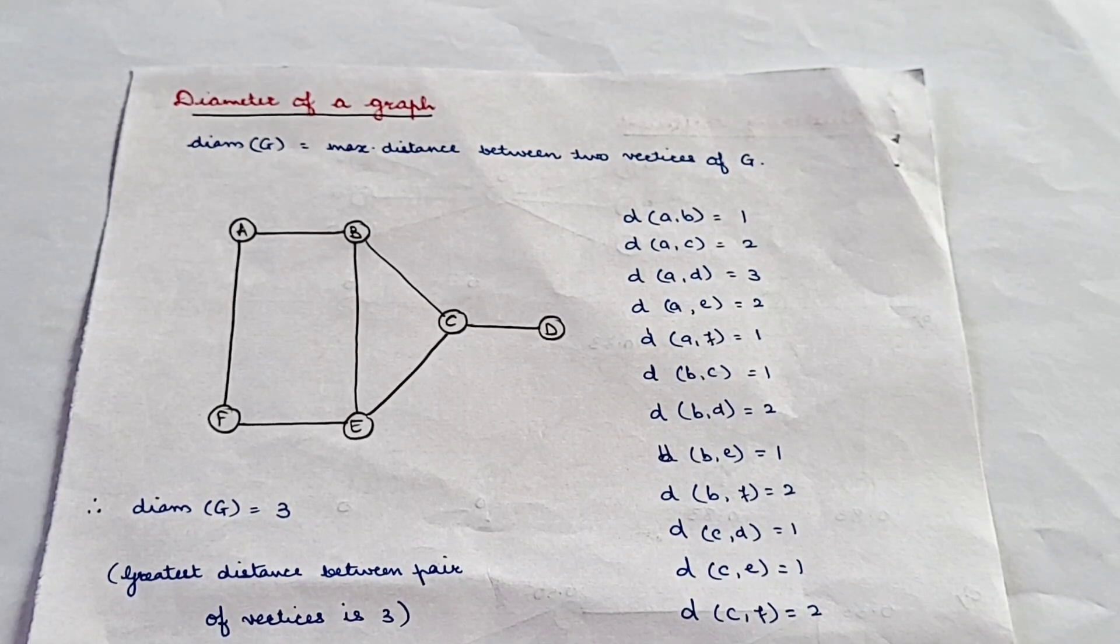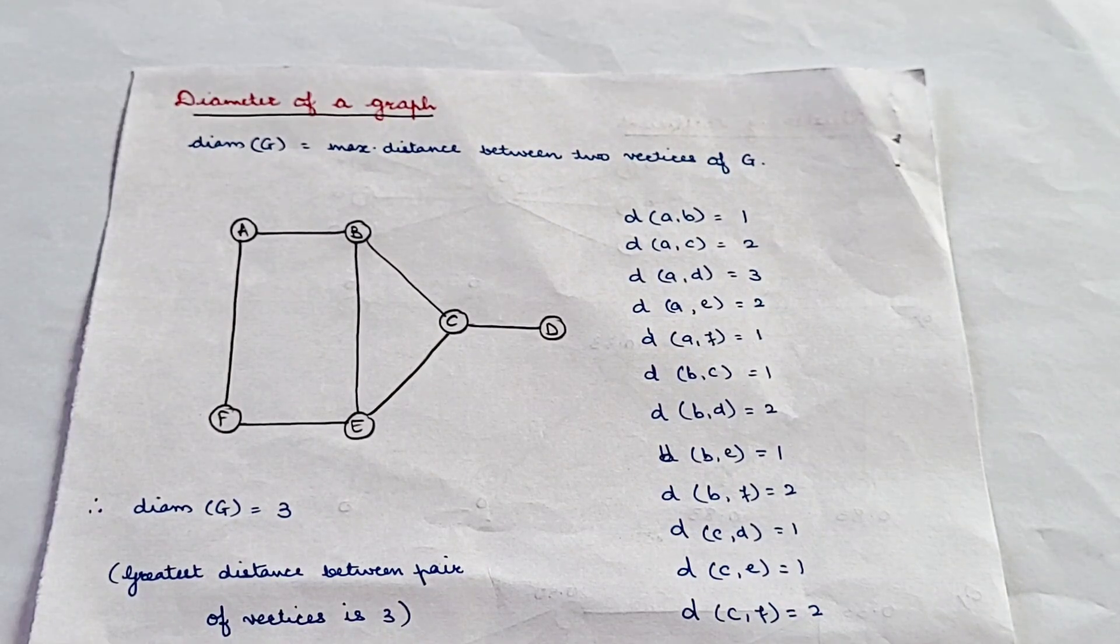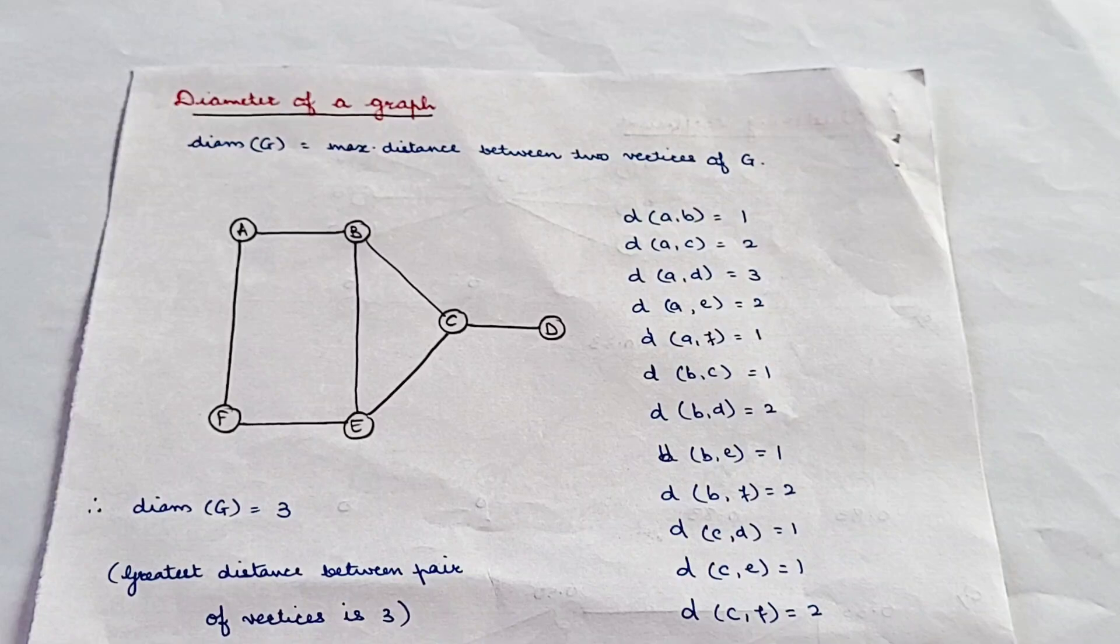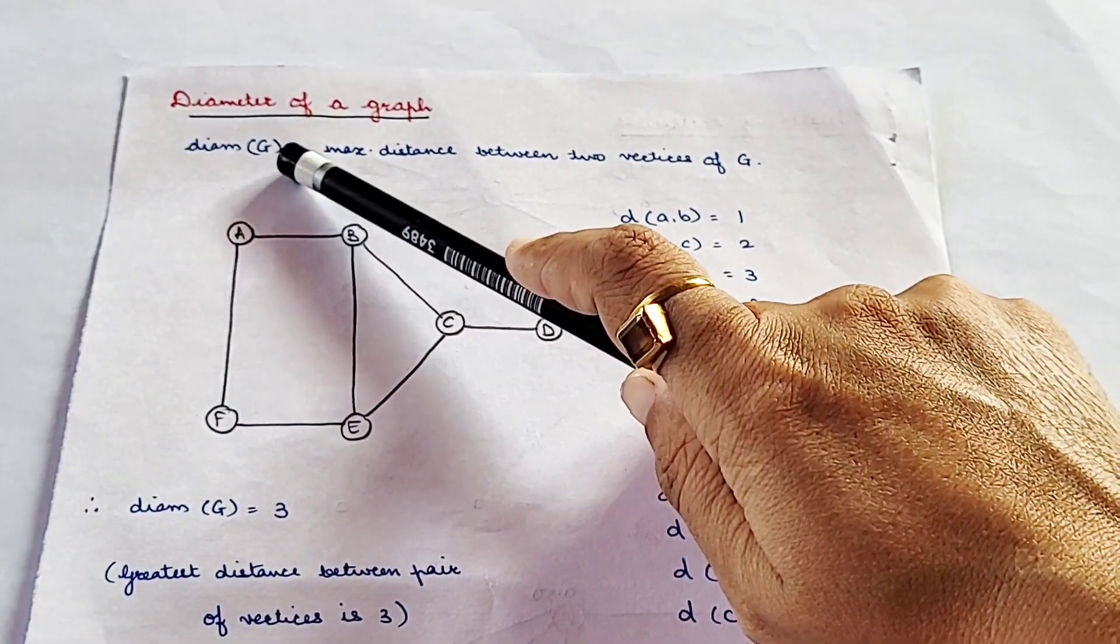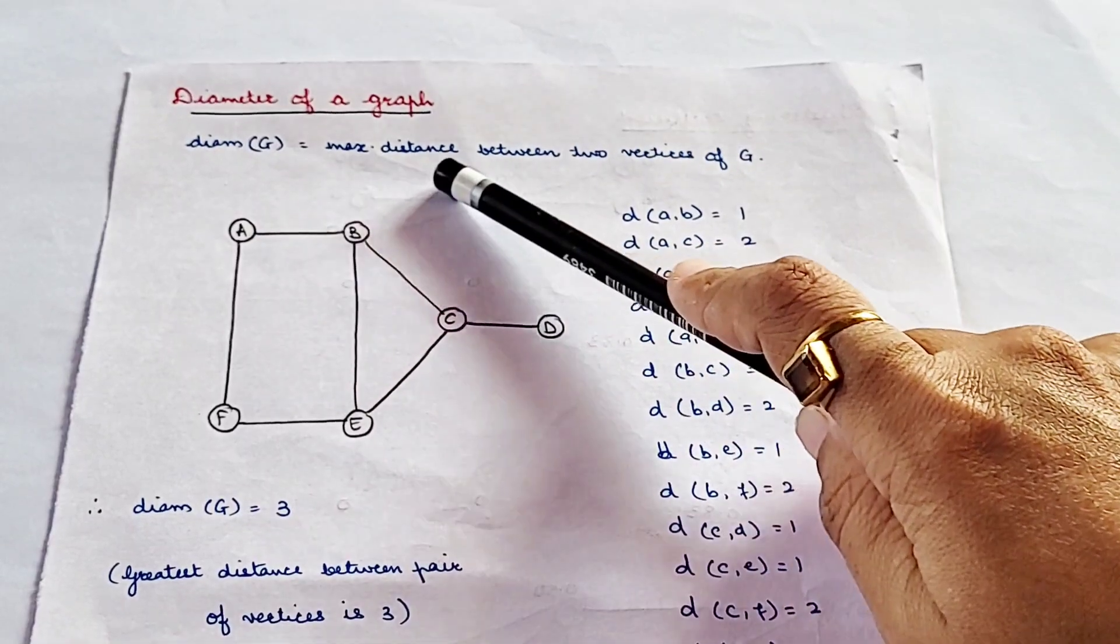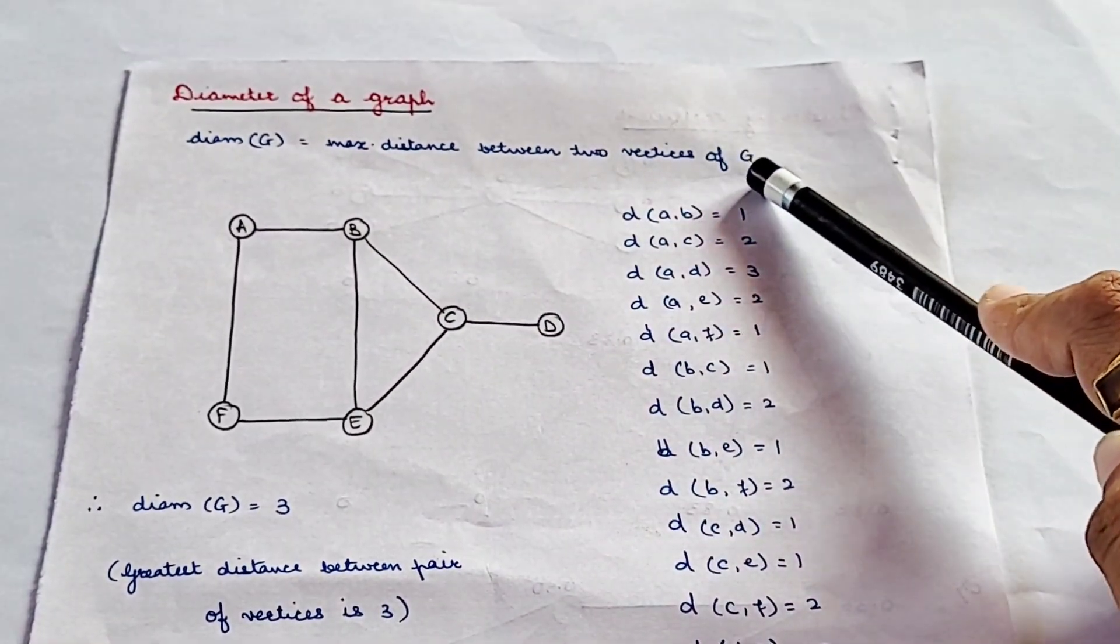Diameter of a graph: basically, a diameter of a graph is a longest shortest path between any two vertices in a graph. It represents the greatest distance between any pair of nodes when measured using the shortest possible path. Diameter of a graph is given as diam(G) is equal to maximum distance between two vertices of G.